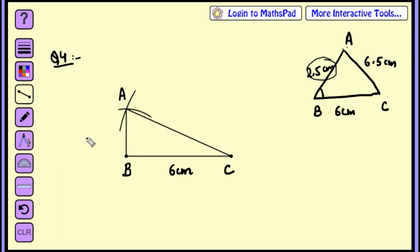So this will be point A. Name this point as A. This is 2.5cm and this is 6.5cm.